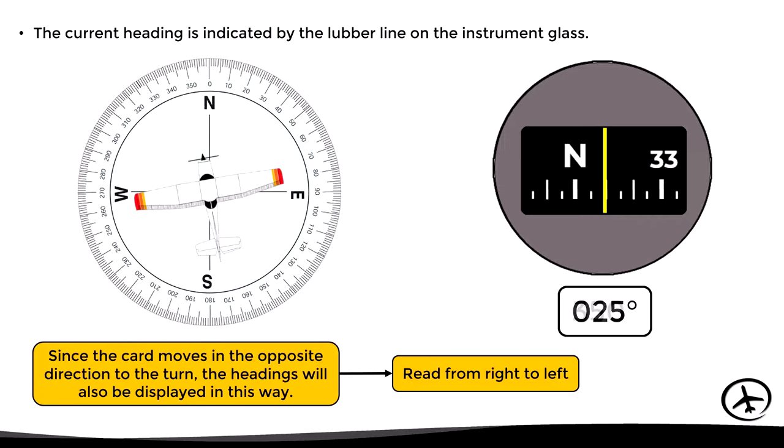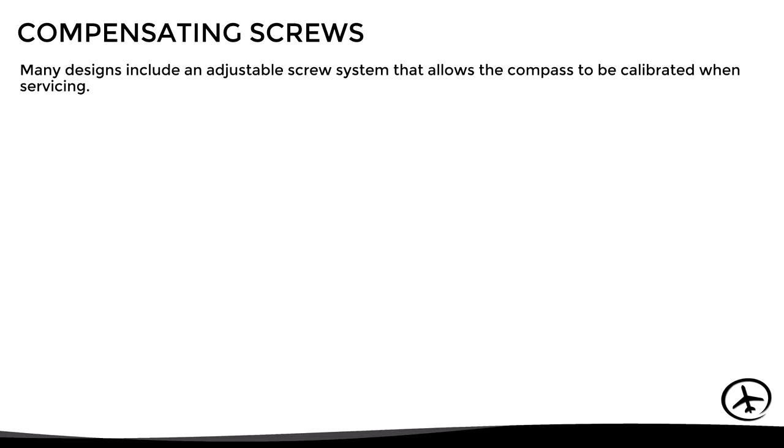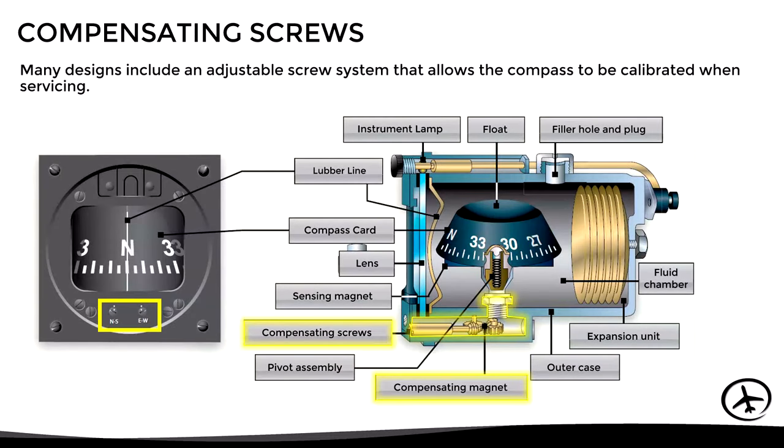Now some compasses incorporate an expansion diaphragm which prevents damage or leakage from the pressure changes experienced by the liquid. Other components that can be found are, for example, the compensation screws.